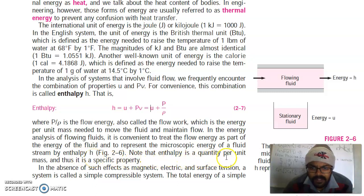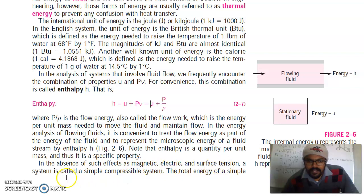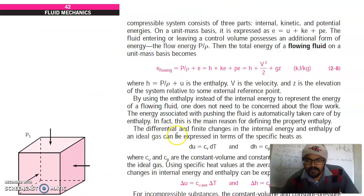Note that enthalpy is a quantity per unit mass and thus it is a specific property. In the absence of magnetic, electric and surface tension effects, a system is called a simple compressible system. The total energy of a simple compressible system consists of three parts: internal, kinetic and potential energies. On a unit mass basis, it is expressed as internal energy, kinetic part and potential energy part. So energy of a fluid on a unit mass basis becomes flow energy plus internal energy equals H plus kinetic plus potential energy. This H includes the internal energy as well as the flow energy, which is H plus V squared over 2 plus gz.